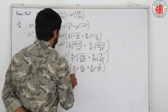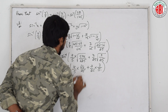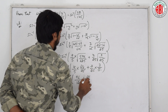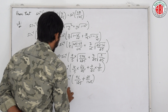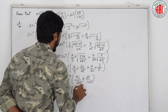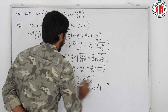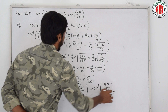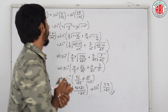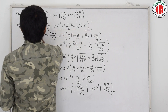Continuing the simplification: 4 by 5 into 24 by 25 gives 96 by 125, and 7 by 25 into 3 by 5 gives 21 by 125. The common denominator is 125. Adding 96 plus 21 gives 117. So we get sin inverse 117 by 125, which is the required answer. We solved this by simply remembering the formula and substituting into it.